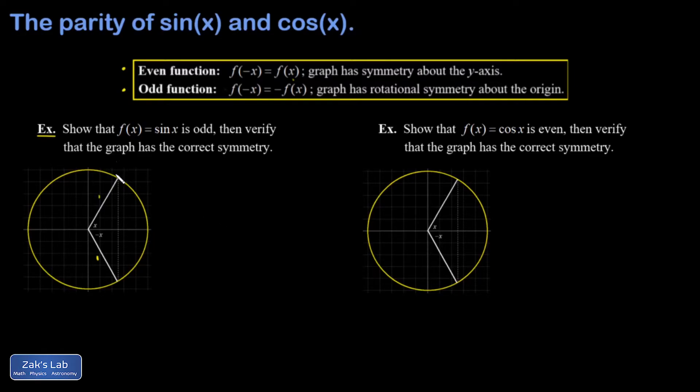The sine of x is just the y-coordinate of this point by definition. That's how the sine function was originally defined. And sin(-x) is the y-coordinate of this point. I can immediately see by symmetry that these y-coordinates have equal magnitudes but opposite signs. In other words, they're negatives of each other.